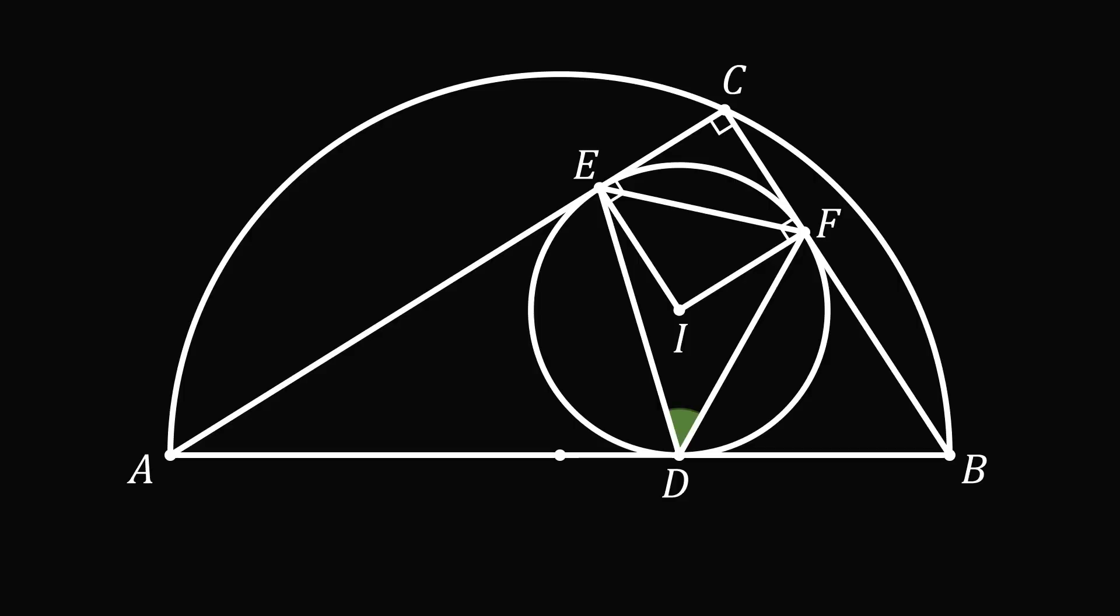We know the sum of all of its interior angles will be 360 degrees. We can subtract out the three right angles, which are each 90 degrees, and we will be left with the remaining angle also equal to 90 degrees. So angle EIF will be equal to 90 degrees.